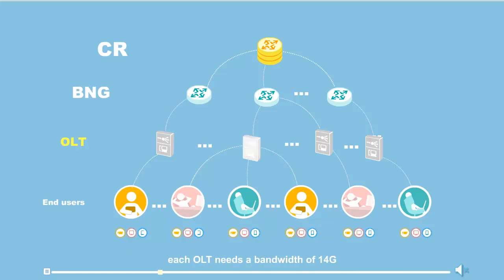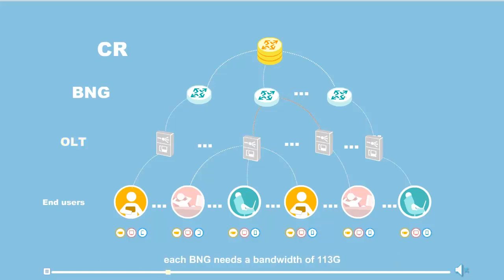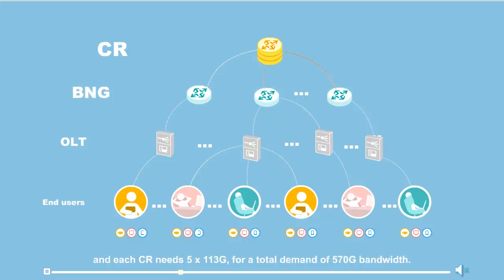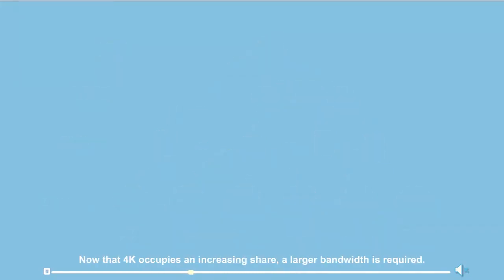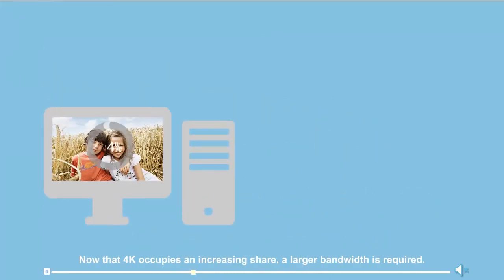To transmit these services, each OLT needs a bandwidth of 14G — 2.9G for broadcast services and 10 × 1.1G for on-demand services. Each broadband network gateway needs 113G, and each core router needs 5 × 113G for a total demand of 570G bandwidth. As 4K occupies an increasing share, larger bandwidth is required.